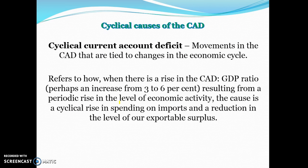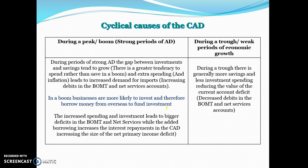In terms of the cyclical causes of the CAD, these are related to movements in the business cycle. Whenever we experience higher rates of growth, there's likely to be a higher current account deficit to GDP ratio because there's more spending in the economy. When the economy is booming, there's generally more spending on imports and potentially fewer exports — but it's mainly related to increased import spending. At a peak, there are strong levels of aggregate demand, a bigger gap between investment and savings, and extra spending generally spills over into imports.